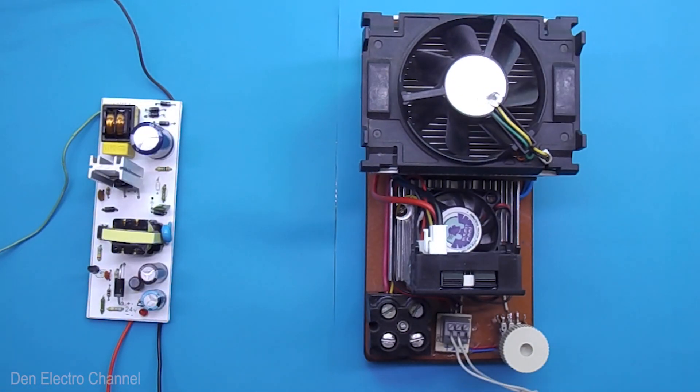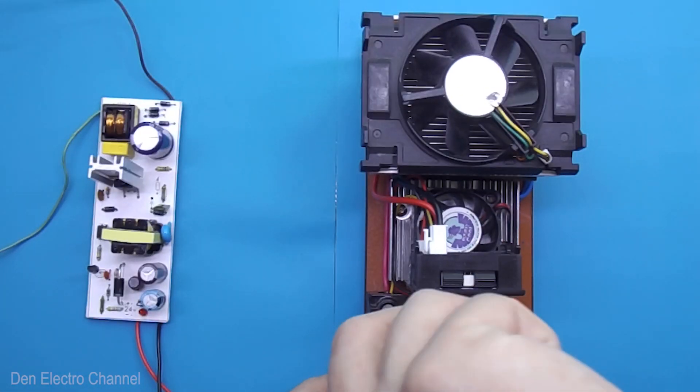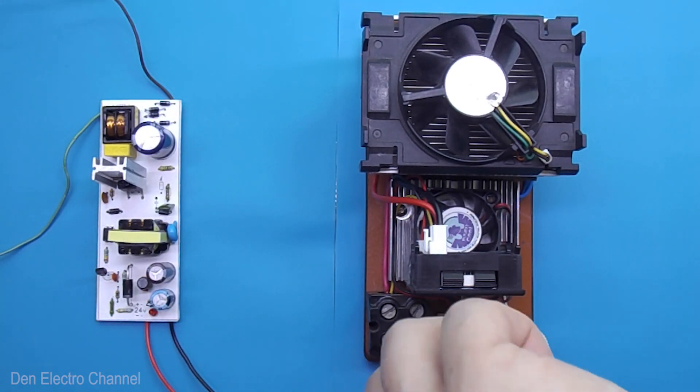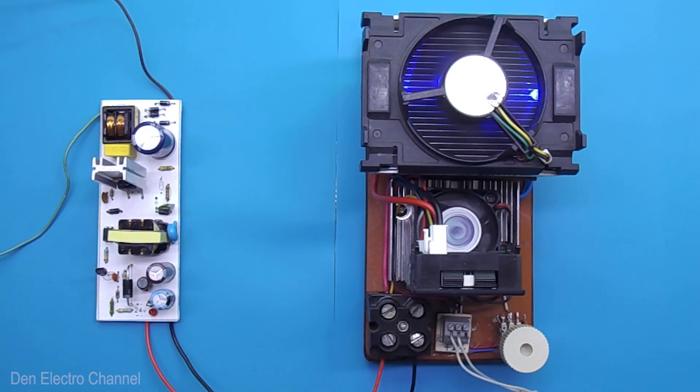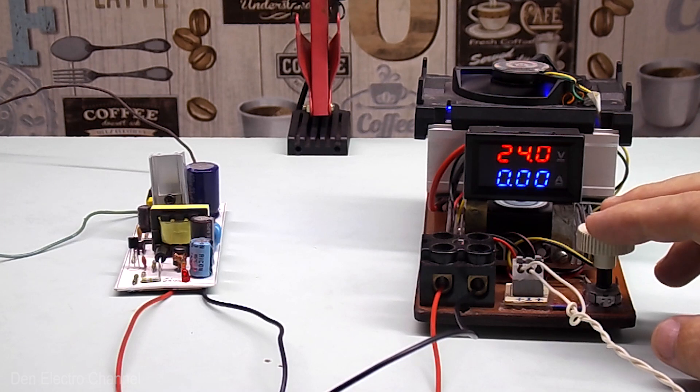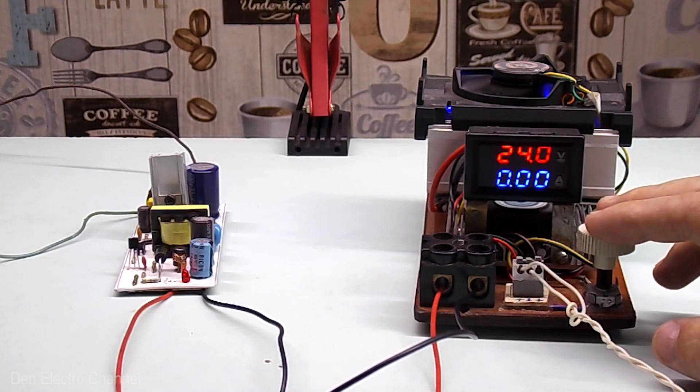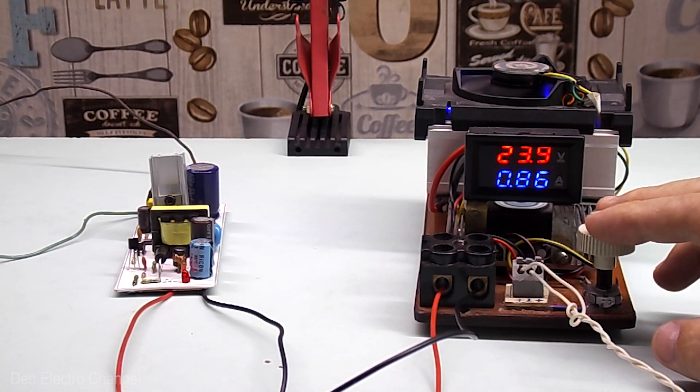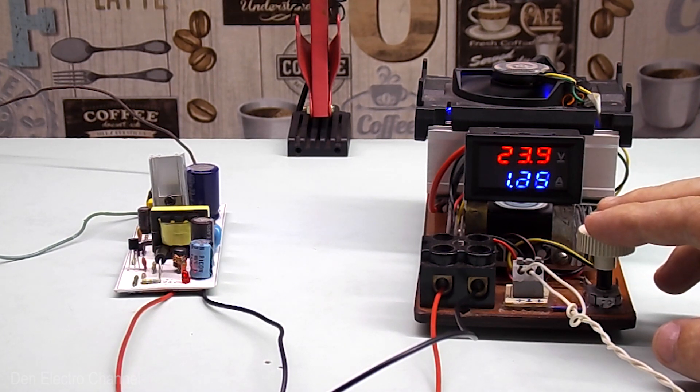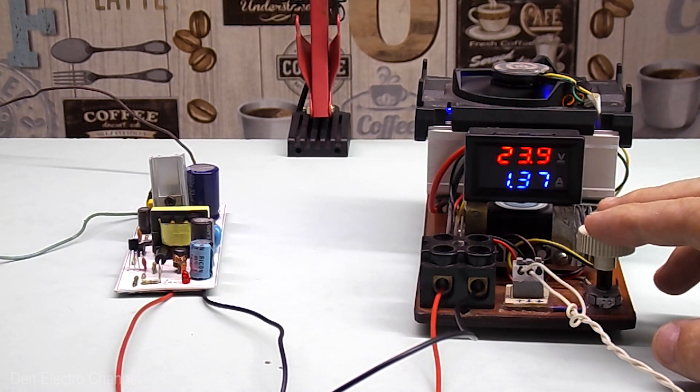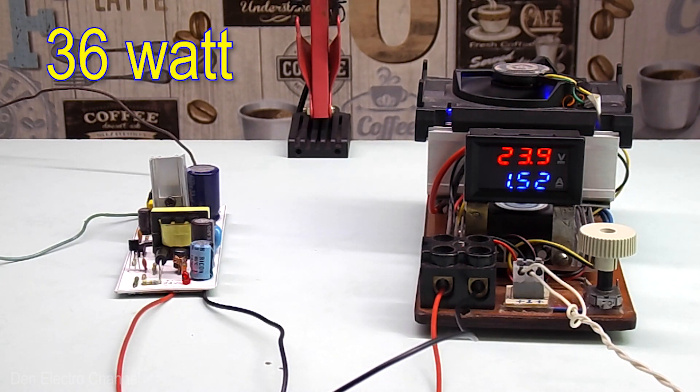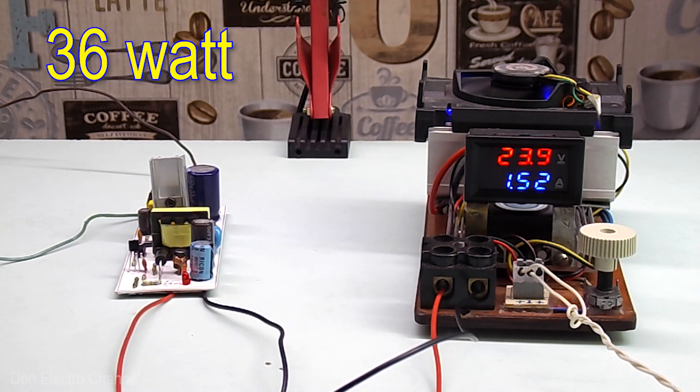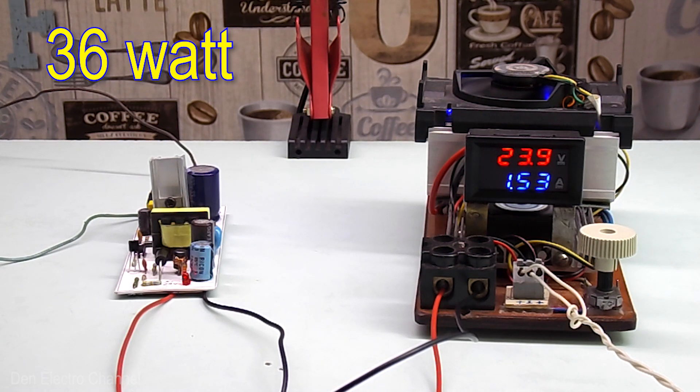Now, it's time for the real test. To test the power supply for maximum power, I will use an electronic load. I showed how to make it a long time ago in one of the previous videos. Slowly rotating the regulator, I increase the load. The voltage has dropped a little, and the current is one and a half amperes. That works out to about 36 watts. This is exactly the power I was counting on this power supply.